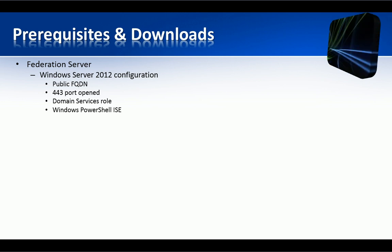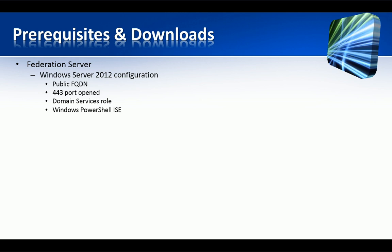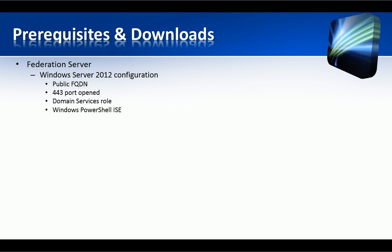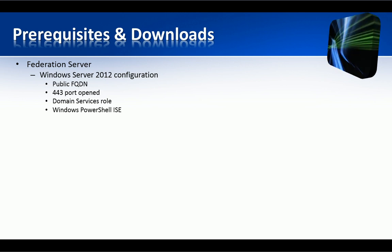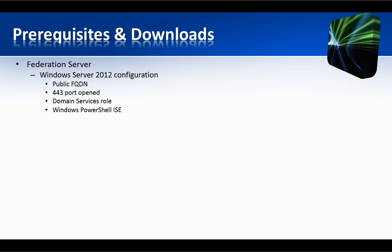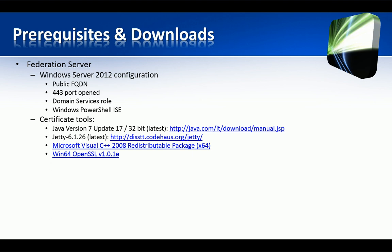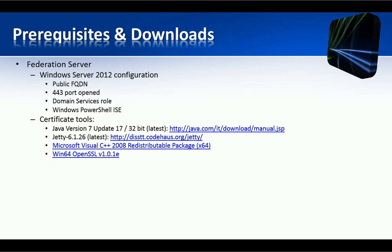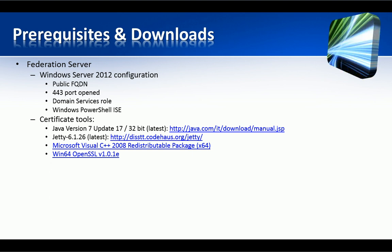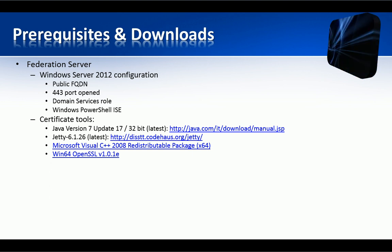The server must be a domain controller, which in a production environment might run on a dedicated server, and we need Windows PowerShell for configuring the federation with Office 365. Such configuration is out of scope for this presentation, so I will assume that you have already implemented it. Then we need a few tools to generate certificate requests, convert them to different formats and finally install them on our server.